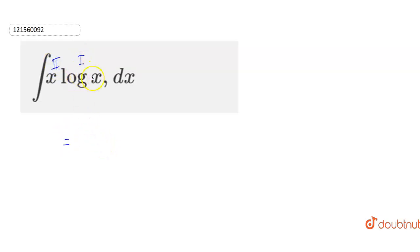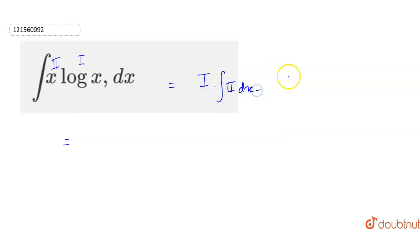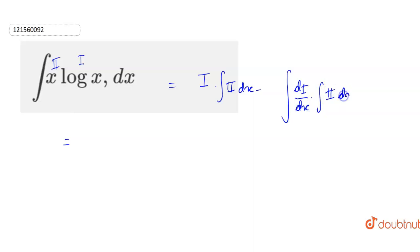So what happens in integration by parts? Basically this is equal to: first function into integration of second function, minus integration of differentiation of first function into integration of second function, dx.